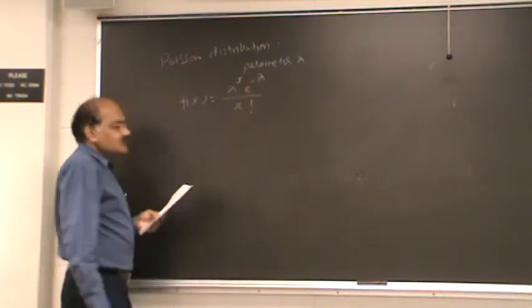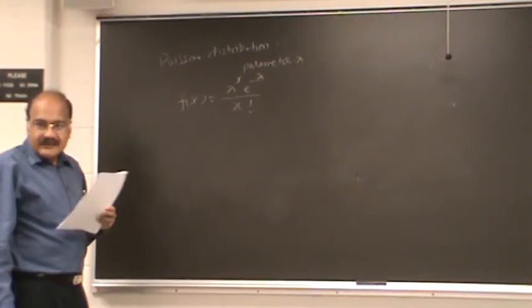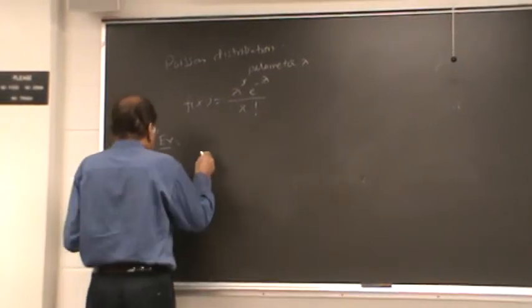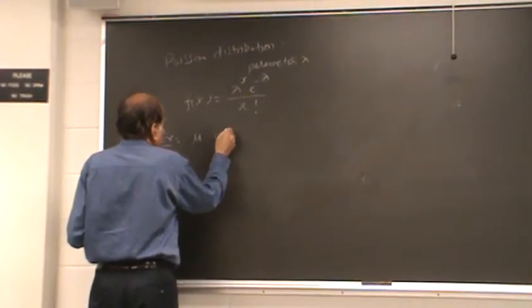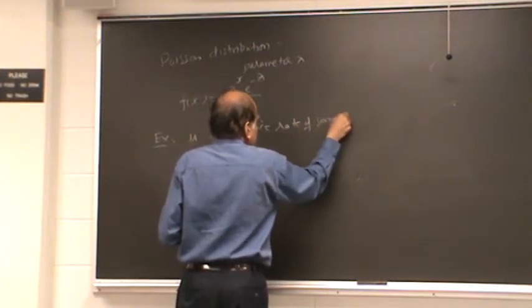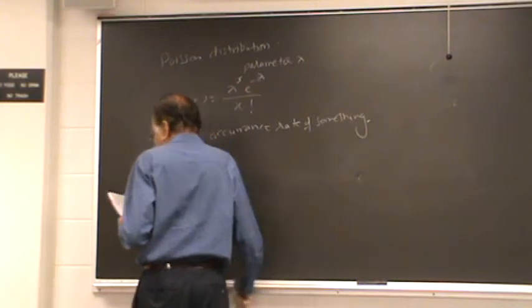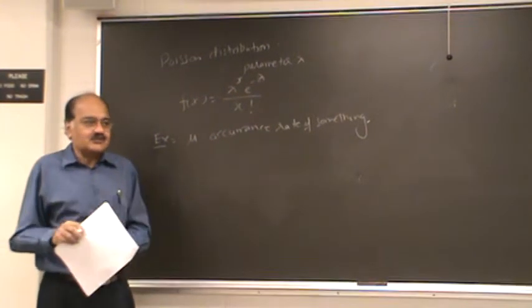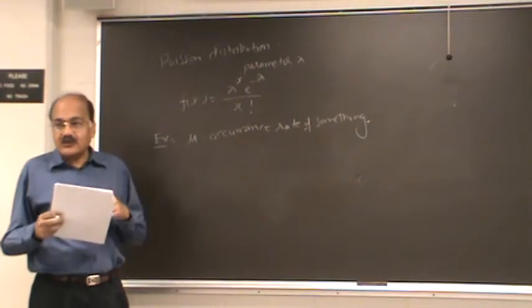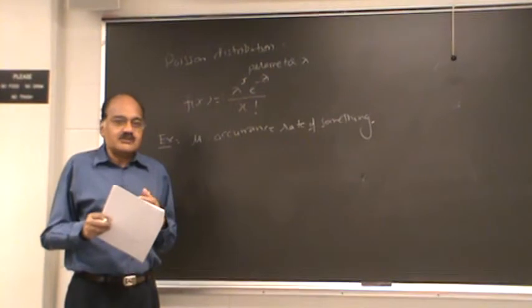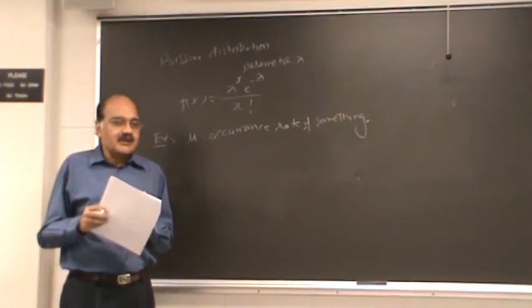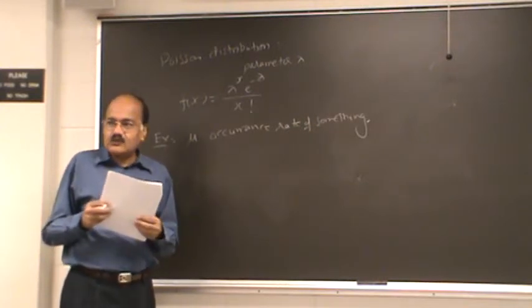Now you might wonder how this arises and we are actually going to look at it later. But let me give you an example. Let us say here you have mu as the occurrence rate of something. A lot of times you talk about occurrence rate of failures or problems, or sometimes people look at queuing theory, which is used in performance analysis for computer networks, talking about arrival rate of people joining a queue.